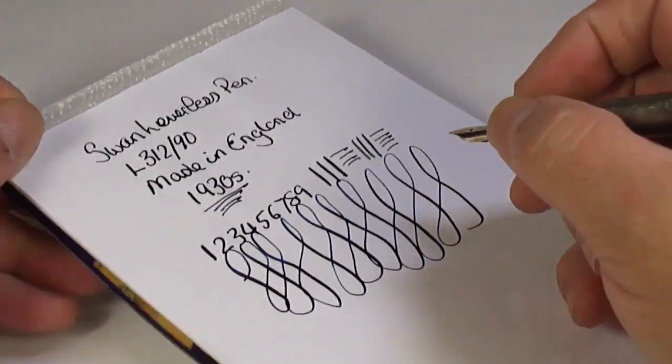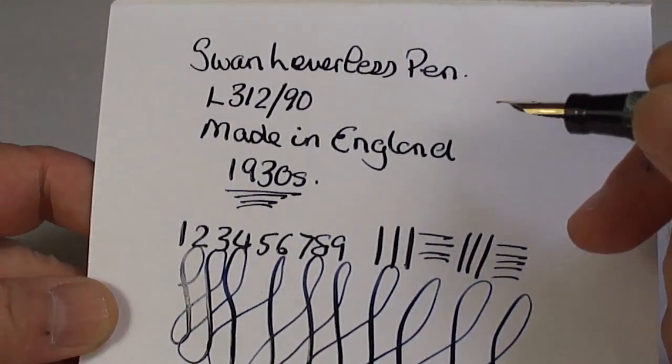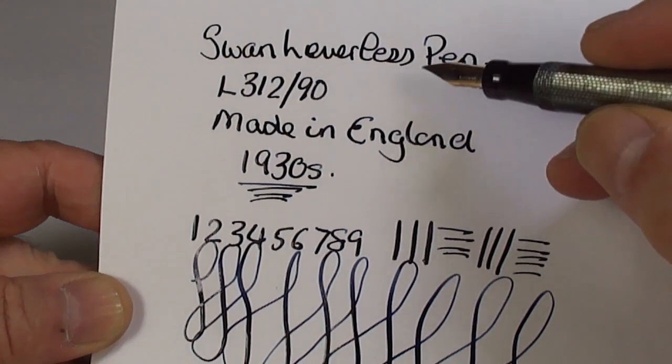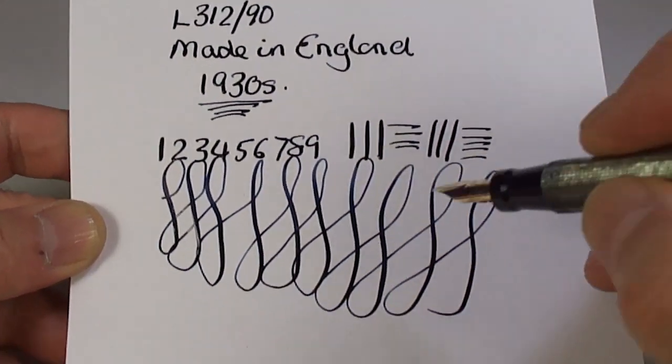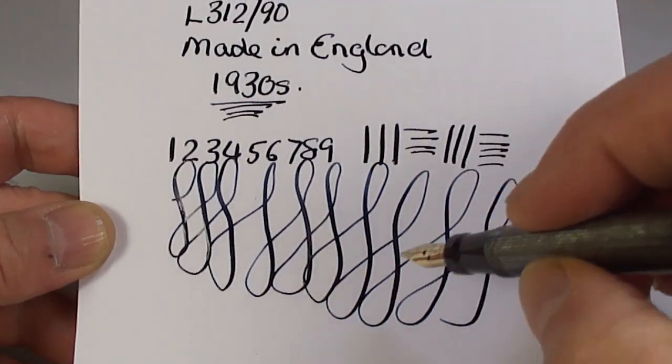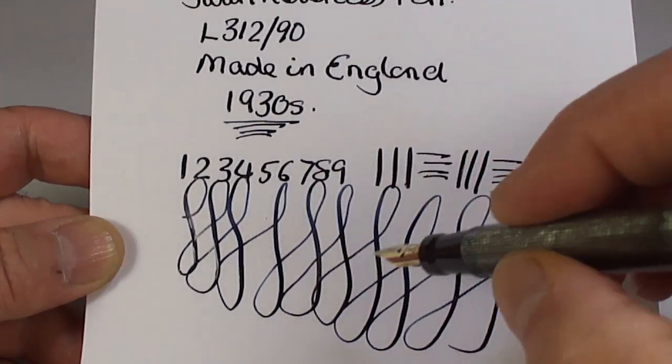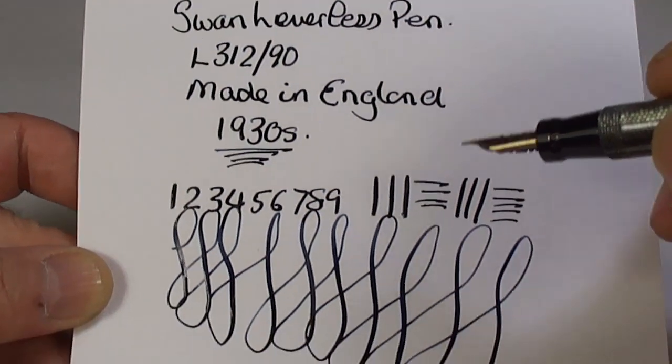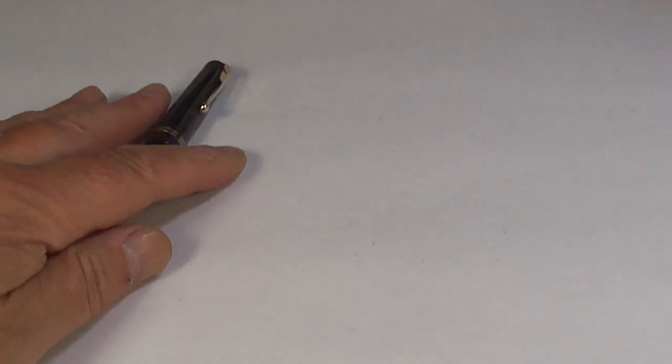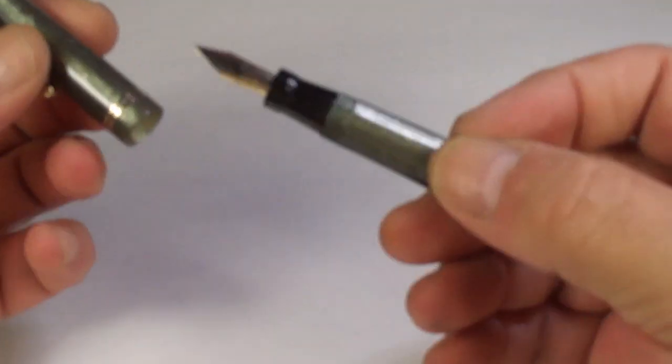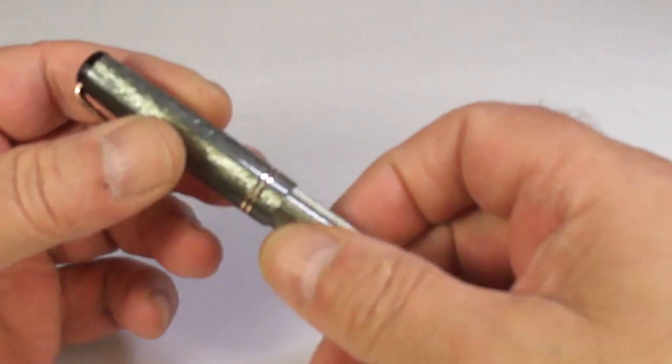It's writing, I would say with a medium line, absolutely gorgeous, but with a little variation in line. With a little pressure on the downward stroke, you can see we're getting a little bit of variation. A gorgeous writer.